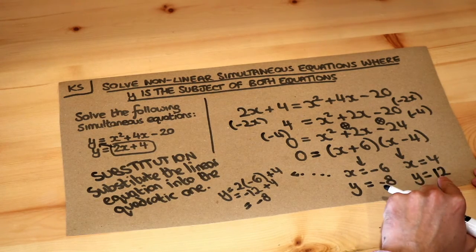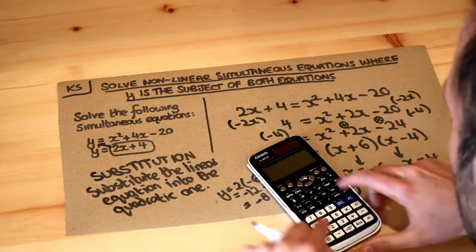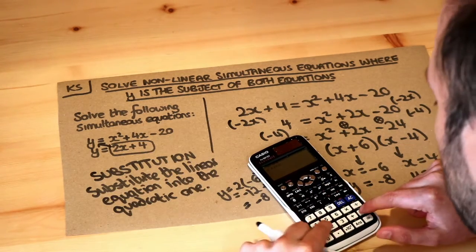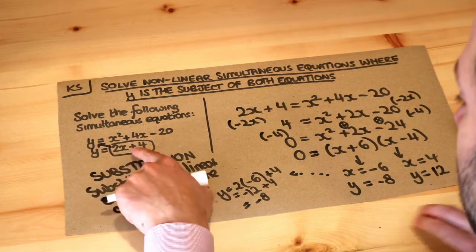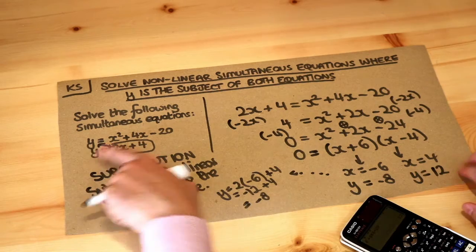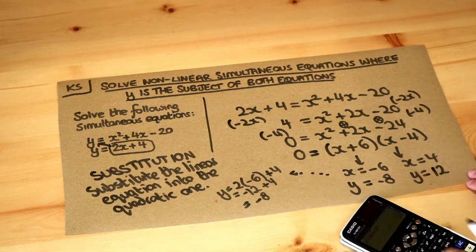When x is 4, y would be 12, and let's just check that with the other equation. If we put 4 into this, 4 squared plus 4 times 4 minus 20 does indeed give you 12. My calculator says 12, and if you substitute into the second equation, put 4 into this, 2 times 4 plus 4 is indeed 12. So this pair of values satisfies both equations, just as this pair of values would as well.